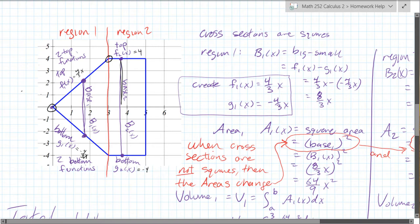Because on the top, small function is g1, it's on the bottom, and you just subtract the two, right here, and you get eight thirds x. All right, so that is the base one.